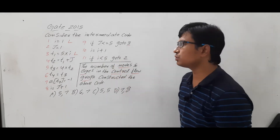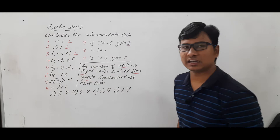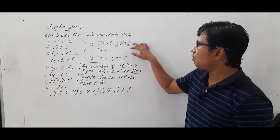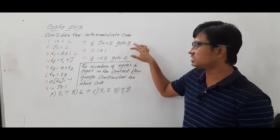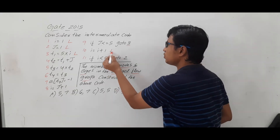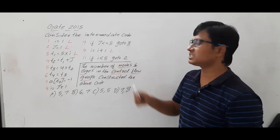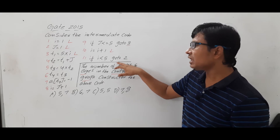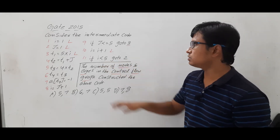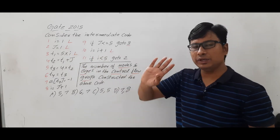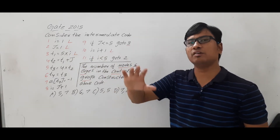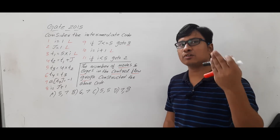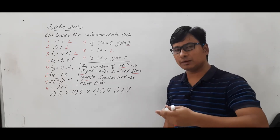It is written as 'goto 2', so that instruction will also act as a leader. Till now I have got three leaders. The next important step: whatever instructions come after a conditional or unconditional goto statement will also act as a leader. So instruction number 10 will act as a leader, giving us four leaders total. I have already discussed the procedure for identifying leaders — if you have not watched that video, please go back and watch it for better understanding.